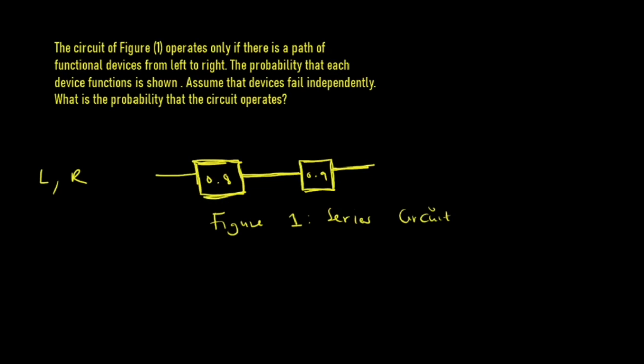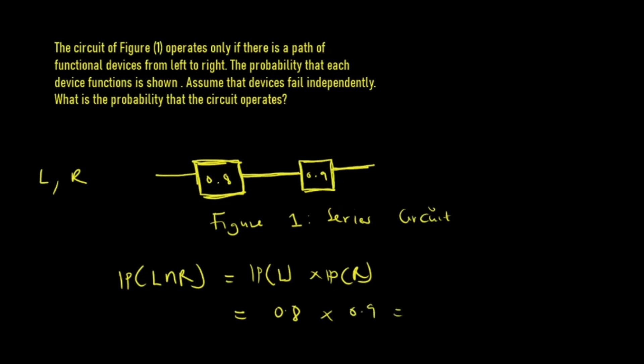Since both devices operate independently, we can find the probability that the circuit operates as the probability of L intersection R. Because they are independent, this equals the probability of L times the probability of R, which is 0.8 times 0.9, giving us a probability of 0.72.